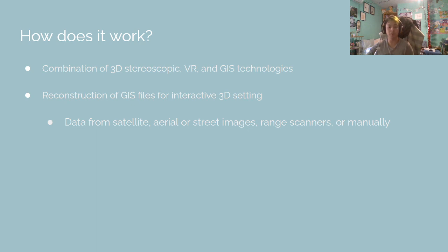VRGIS works by combining VR and GIS technologies by making use of 3D stereoscopic imagery. GIS data files are converted into an appropriate format for a 3D setting. Data for these files can come from a variety of sources, including satellite imagery and LIDAR scanners.